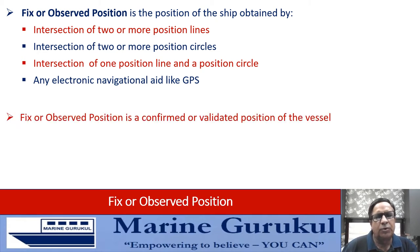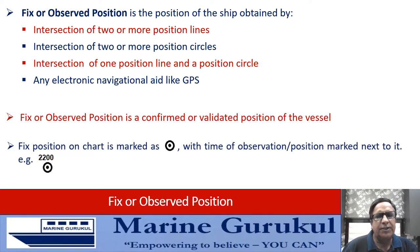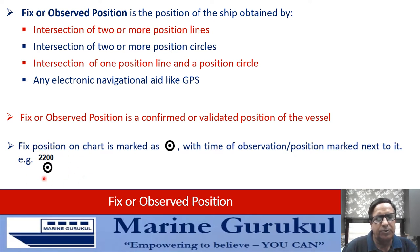A fixed position or observed position is a confirmed or validated position. It is represented on the chart with a symbol of a dot and a circle surrounding it. The dot in the center represents the position of the ship, and the time for which the fix has been marked can also be indicated against the symbol.